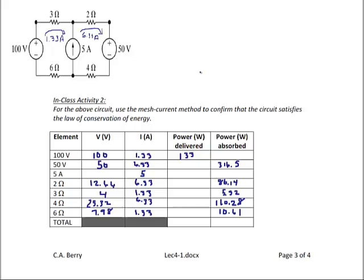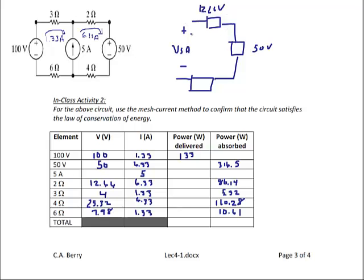To find the voltage across the 5 amp current source, we use KVL summing the voltage across the 2-ohm resistor (12.66 V), the 50 volt source (50 V), and the 4-ohm resistor (25.32 V), giving 88 volts across the current source. So the power is 88 times 5 equals 440 watts, also delivered. Total power delivered is 573 watts and total power absorbed is 573 watts, confirming conservation of energy.